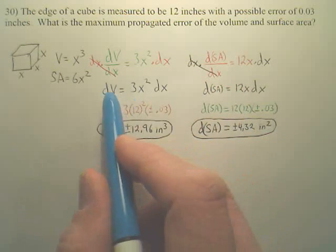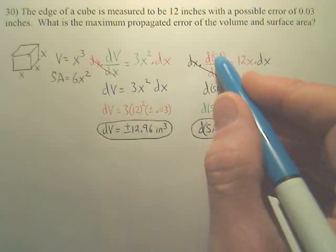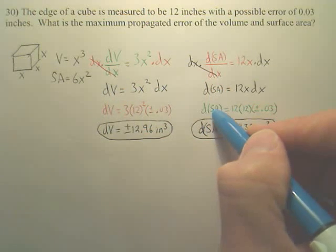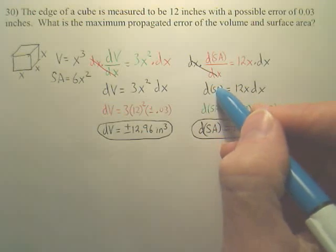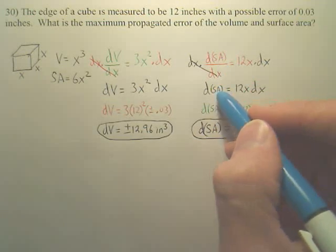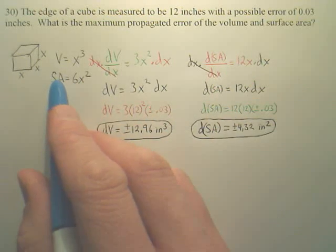So it's called propagated error. And then this right here is called a differential. And by the way, SA, probably not a good idea to put SA, because you might think that's S times A. I should have put probably S sub S for surface area. So that's probably not the best choice of letters.